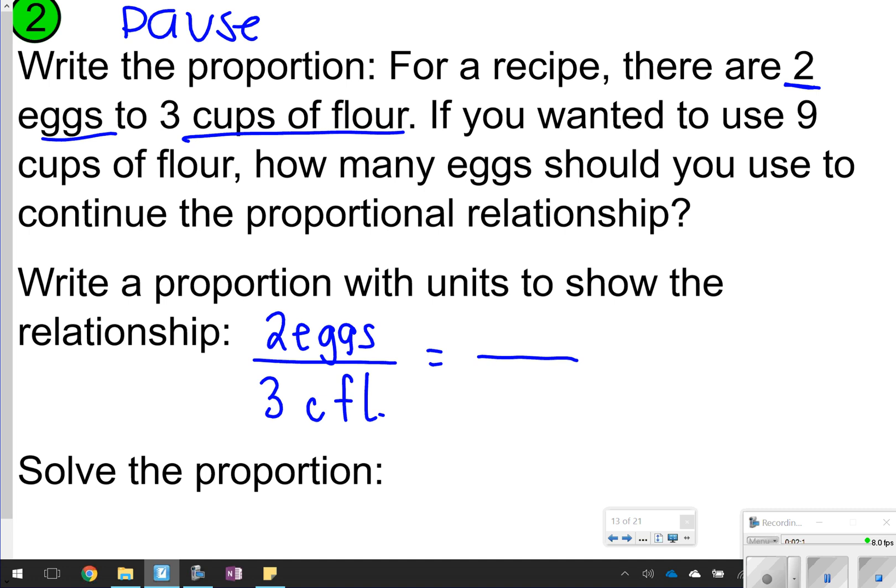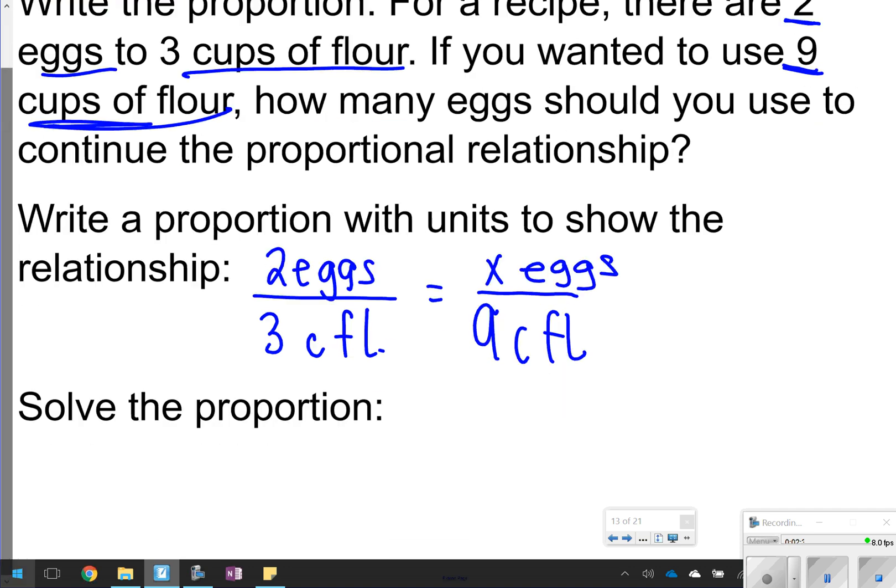If you wanted to use nine cups of flour, how many eggs did you use in the proportional relationship? Nine cups of flour goes with flour. So I'm going to put nine here at the bottom because I already have eggs to flour over here. So I'm going to do eggs to flour over here. I don't know the number of eggs, so I'm going to write X eggs, and then maybe even figure out if I can solve this proportion.